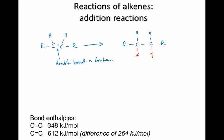Let's look at the bond enthalpies. The bond enthalpy of a carbon-carbon single bond is 348 kilojoules per mole, whereas that of a double bond is 612. Now, this 612 is the amount of energy required to completely break the double bond, to separate the carbon atoms completely. That means breaking both of those bonds that make up the double bond.